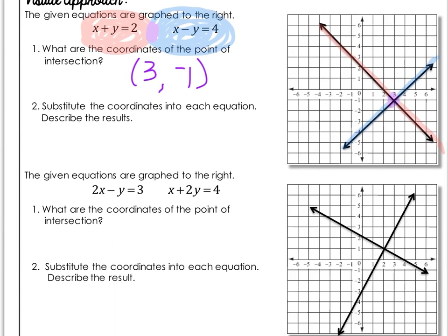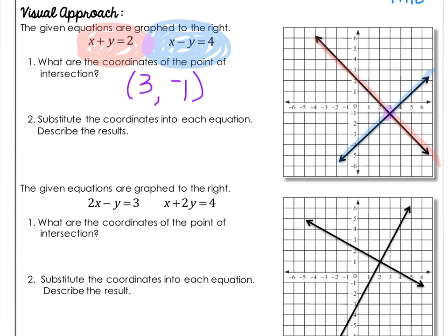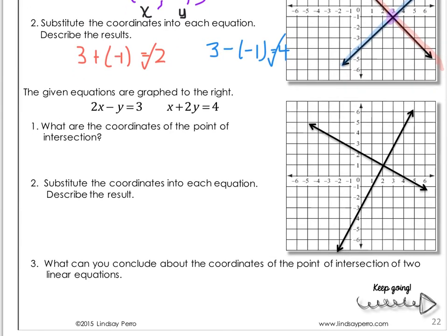What that means is this is the only point that is true for both equations. If we substitute those coordinates — X is the first number and Y is the second — our first equation gives us 3 plus negative 1 equals 2, which is a true statement. For our second equation, 3 minus negative 1 is 4, so that's also true. The coordinates 3, negative 1 are true for both equations. Let's do another example and see how much of this you can do on your own.